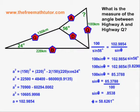The result is that the unknown angle theta, the angle between Highway A and Highway Q in the diagram, is equal to 58.6261 degrees, again rounded off to four decimal places.